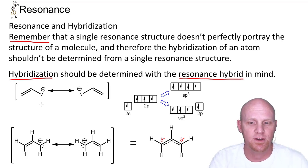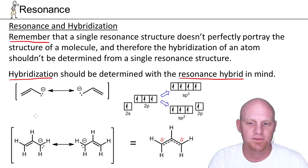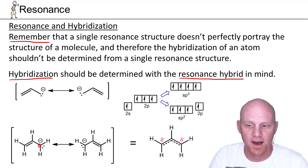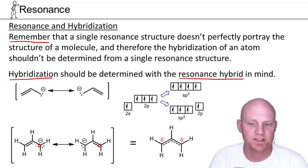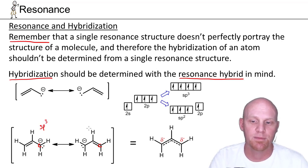So if we take a look at the allylic anion here — and I want to look at it with all the hydrogens in so we can get a better look at it — we're going to look at this carbon atom in the two resonance structures. In the resonance structure on the left, it has three sigma bonds and a lone pair, and appears to be sp3 hybridized.